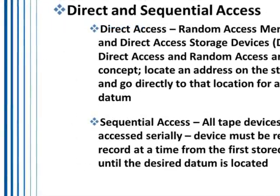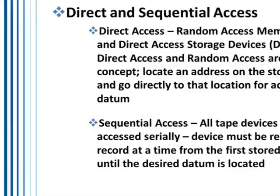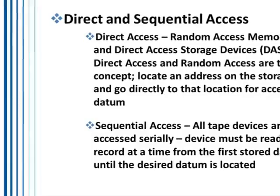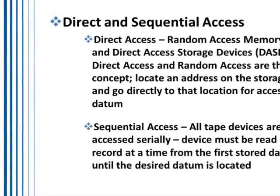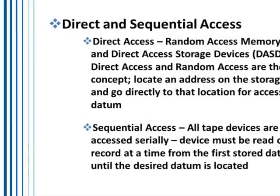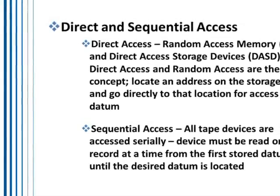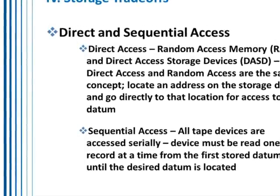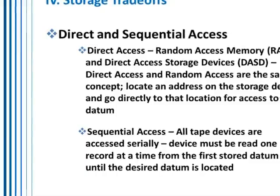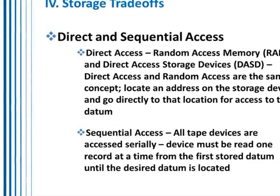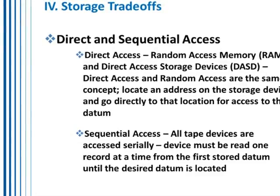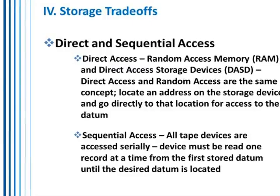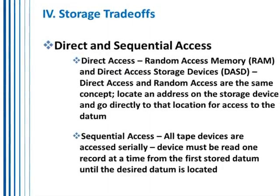We also want to understand how information is stored. Your hard disk operates on direct access methods, also called DASD, which is a method for obtaining information very quickly. There's another type called sequential access, like a tape — where to get to data at position Z, you have to go through A, B, C, D, all the way through the alphabet. You have to go sequentially to obtain that information, which is incredibly slow.